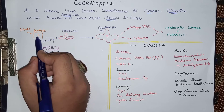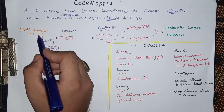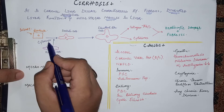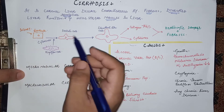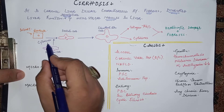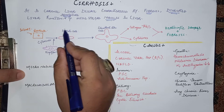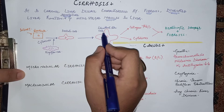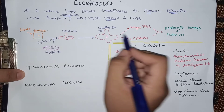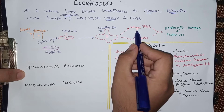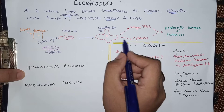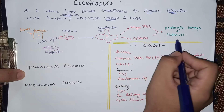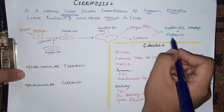Regarding the pathophysiology of cirrhosis: if there is any injury to the hepatocyte, whether due to viral hepatitis or alcohol abuse, the damaged hepatocyte releases cytokines. These cytokines, also released from Kupffer cells, stimulate the stellate cells in the space of Disse. The stellate cells then convert into fibroblast-like cells, which secrete collagen protein and further cytokines that damage more hepatocytes, causing fibrosis.